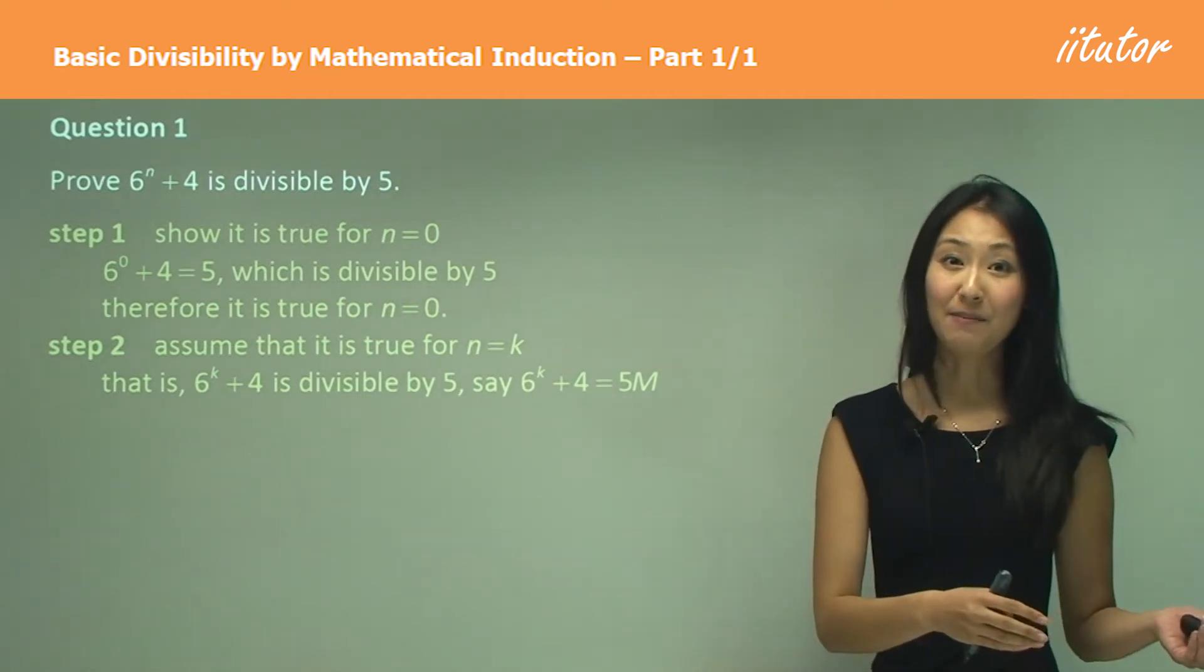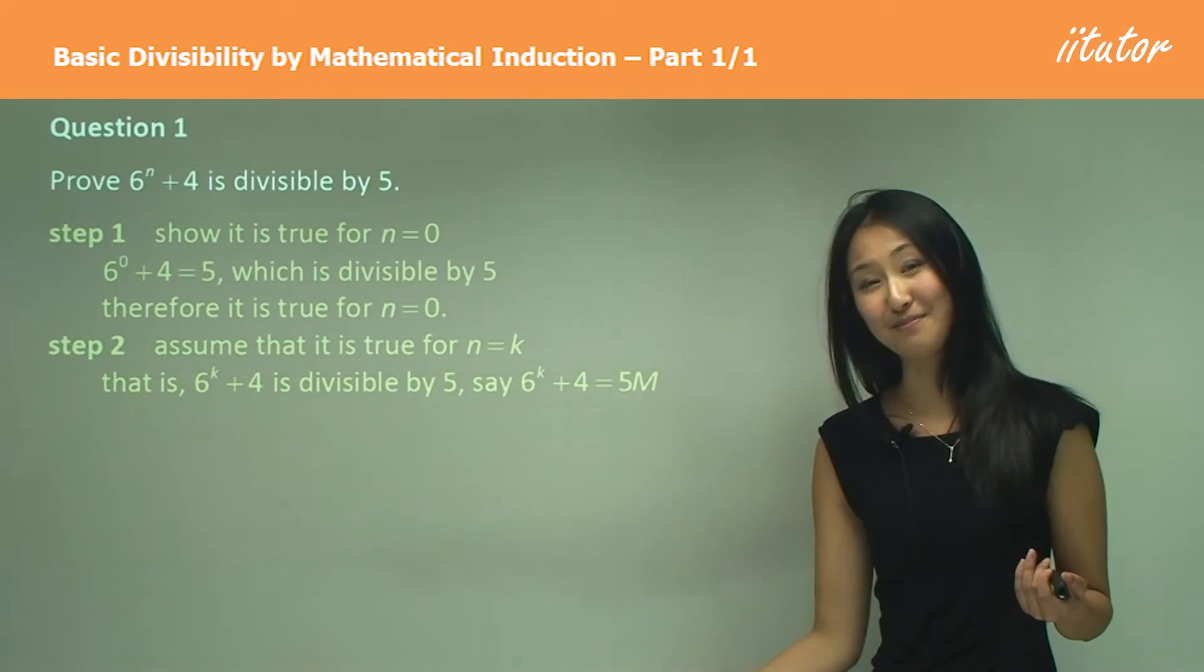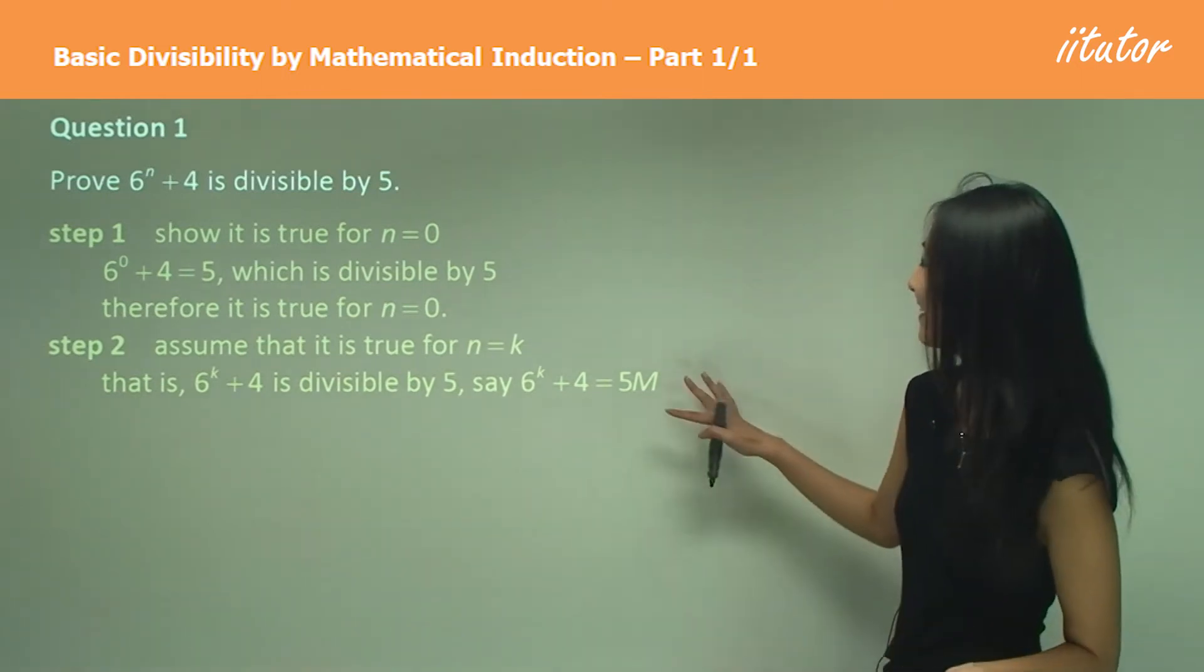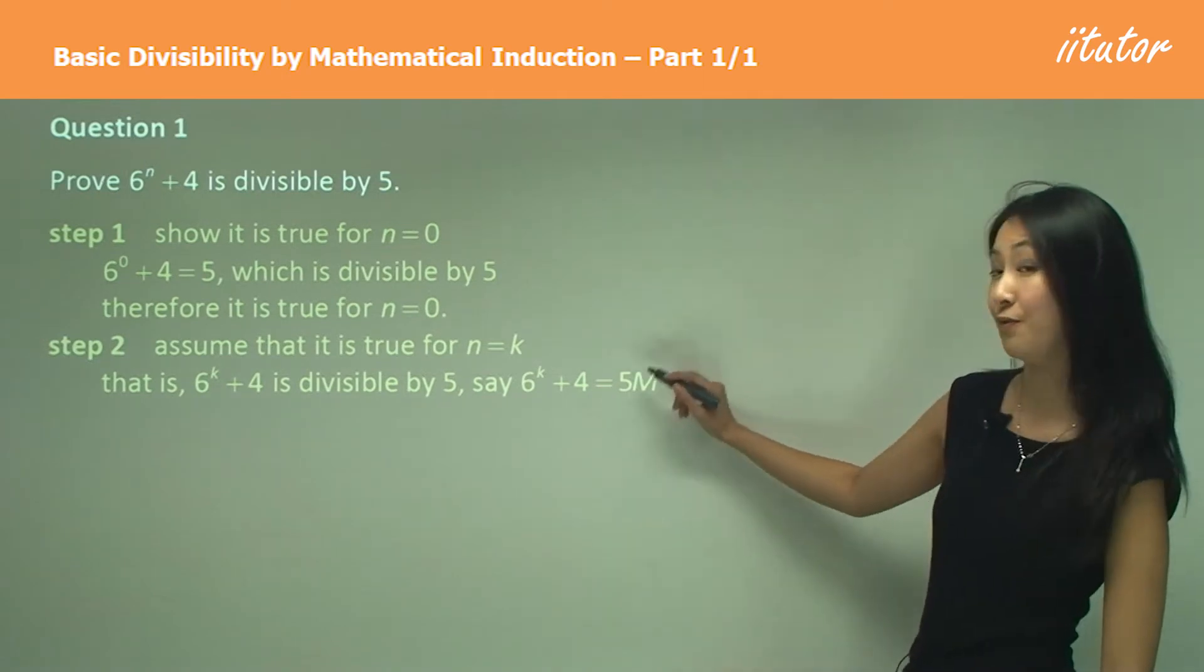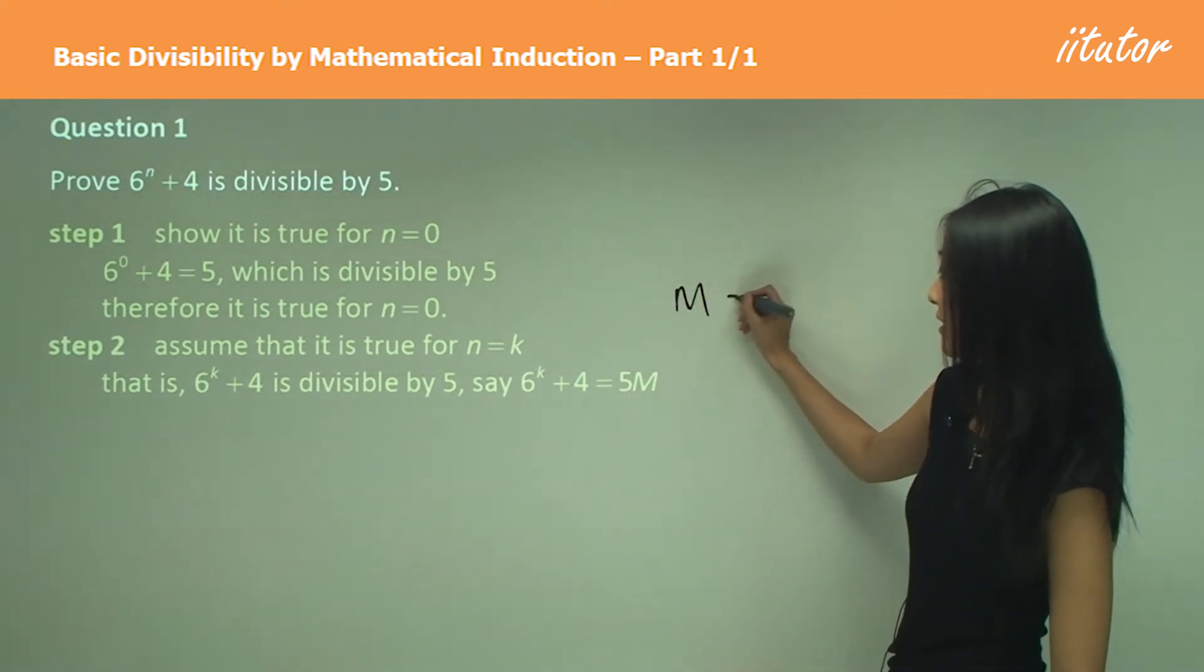If something's multiplied by 5, then we have to assume that it can also be divided by 5. So this is why we say 6 to the power of k plus 4 equals 5m, where m is just any other integer.